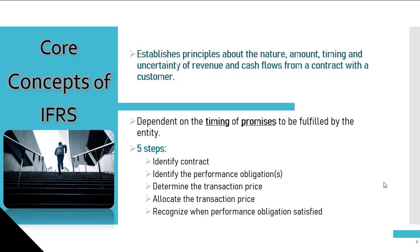The first is to identify the contracts with the customer. The second is to identify the performance obligations in the contract — performance obligations are promises in a contract to transfer to a customer goods or services that are distinct. The third is to determine the transaction price, which is the amount of consideration that an entity expects to be entitled to. The fourth is to allocate this transaction price to each performance obligation on the basis of the relative standalone selling prices of each distinct good or service. And the last is to recognize revenue when a performance obligation is satisfied by the transferring of promised goods or services. This may be recorded at a point in time or over time.